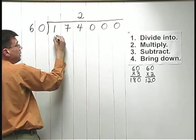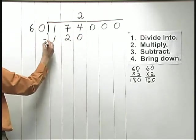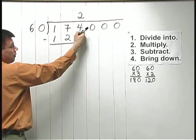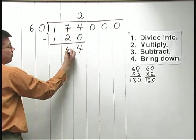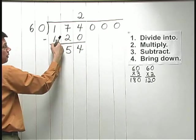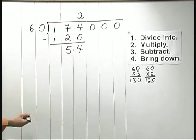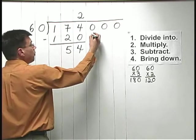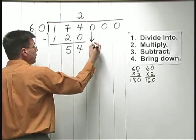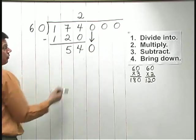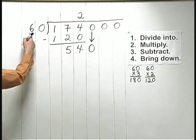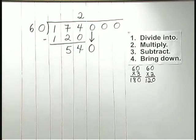So 60 goes into 174 just 2 times. We write the 2 above the 4 and then we multiply. 2 times 60 is 120. And then we subtract. 4 minus 0 is 4. 7 minus 2 is 5. 1 minus 1 is 0. We have 54 after we subtract. After you subtract, bring down the next digit. We bring down the 0. Now we have 540. And we want to ask ourselves, how many times does 60 go into 540?